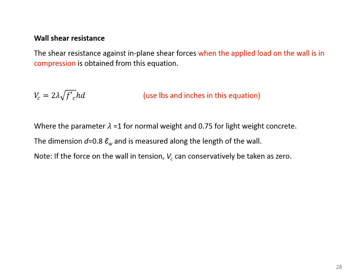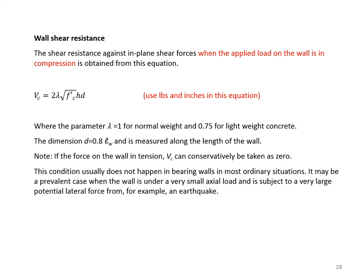If the force on the wall is in tension, Vc can conservatively be taken as 0. This condition usually does not happen in bearing walls in most ordinary situations; it may be prevalent when the wall is under very small axial load and subject to very large lateral force from, for example, an earthquake.